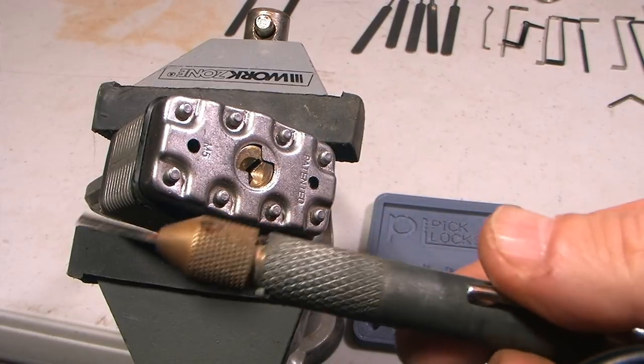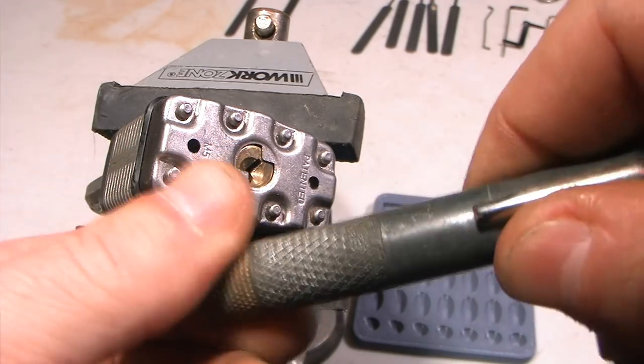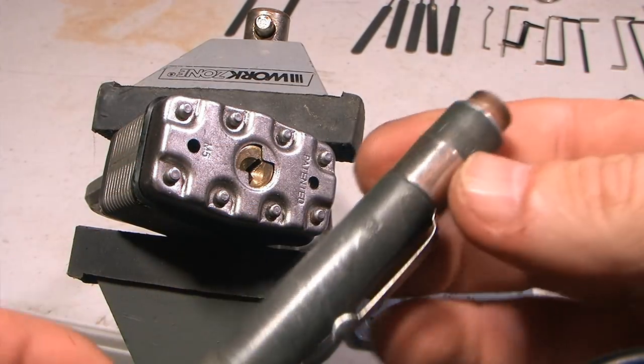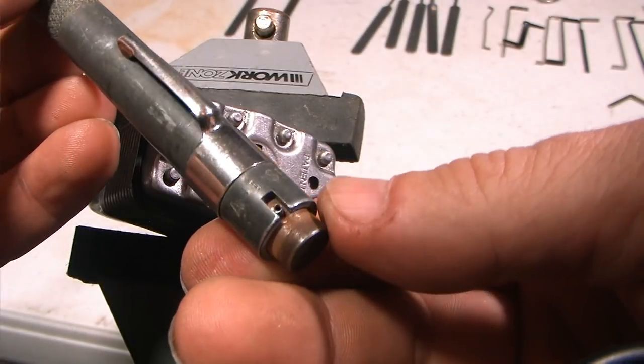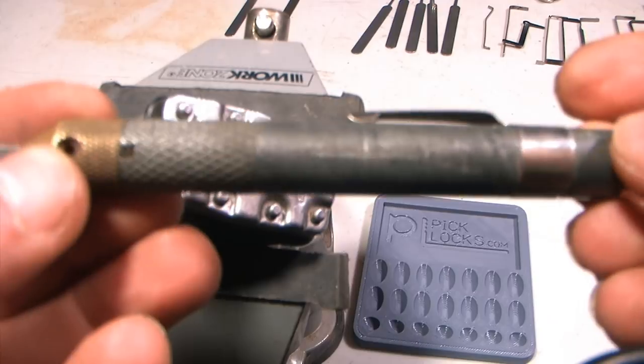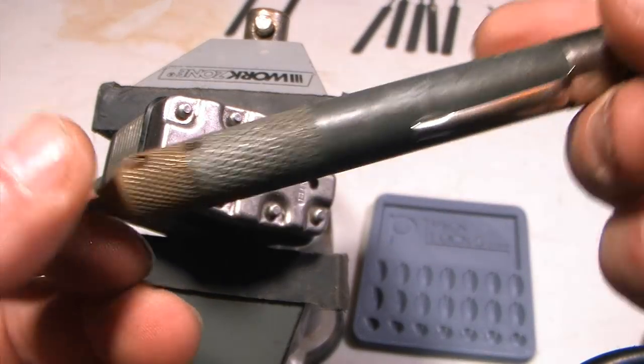Weapon number two is a plug spinner. So I'm going to cock this once, twice, and third time is the charm. This particular one is a very old one I got—it's an A1 Security. This is from the 80s, so I got this when I was about 16 years old and I was locksmithing.